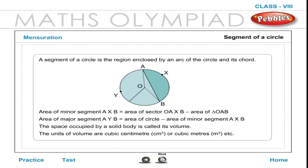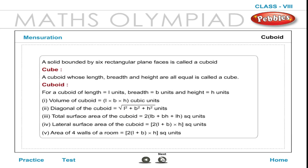The space occupied by a solid body is called its volume. Units of volume are cubic centimeters (cm³) or cubic meters (m³). A solid bounded by six rectangular plane faces is called a cuboid. A cuboid whose length, breadth and height are all equal is called a cube. For a cuboid of length L units, breadth B units and height H units: 1. Volume of cuboid = L × B × H cubic units.